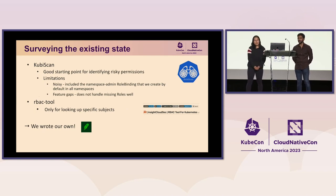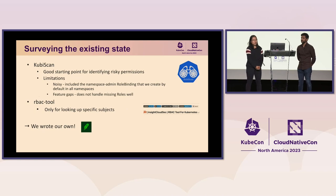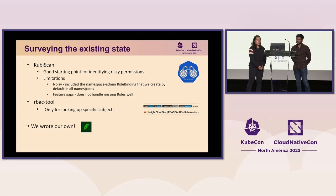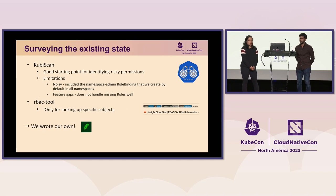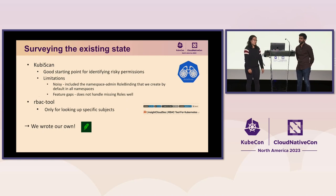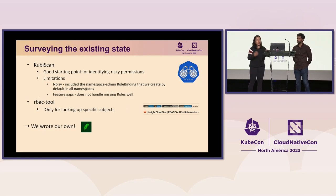We looked at a few open source tools. We used KubiScan, which was a great starting point for identifying what permissions to examine more closely. But we ran into limitations — the results were noisy, since the custom cluster role for namespace admin permissions would show up in every namespace. We also looked at RBAC tool, but that also had limitations, so we ended up writing our own tool, which was useful for aggregating information across our different clusters.